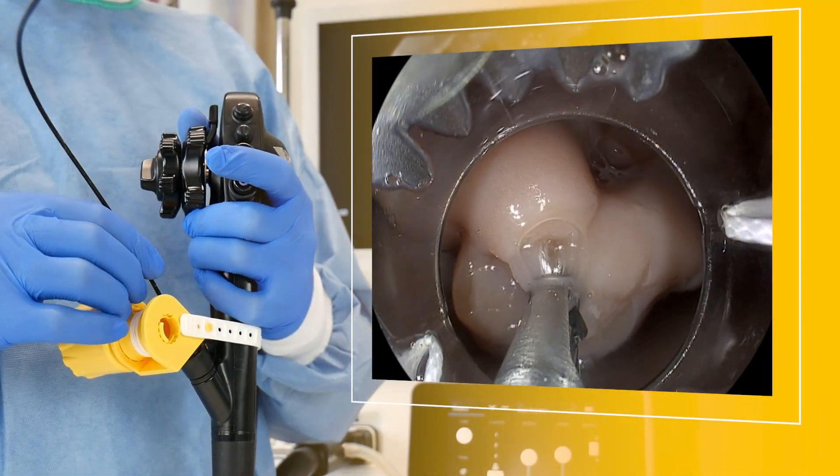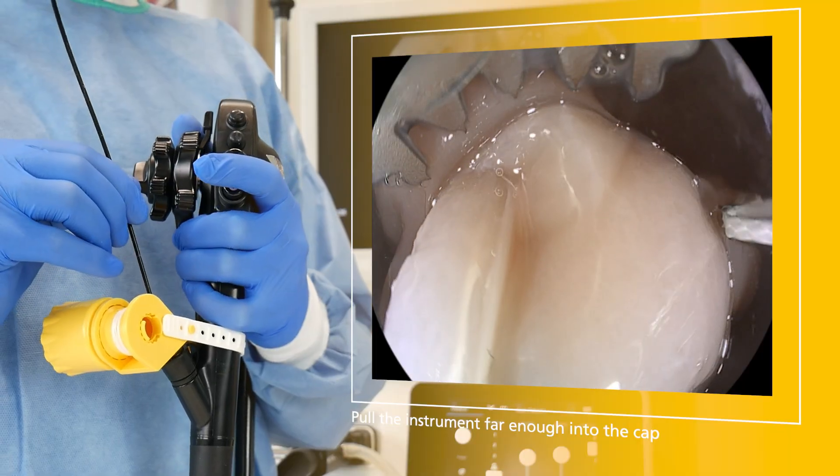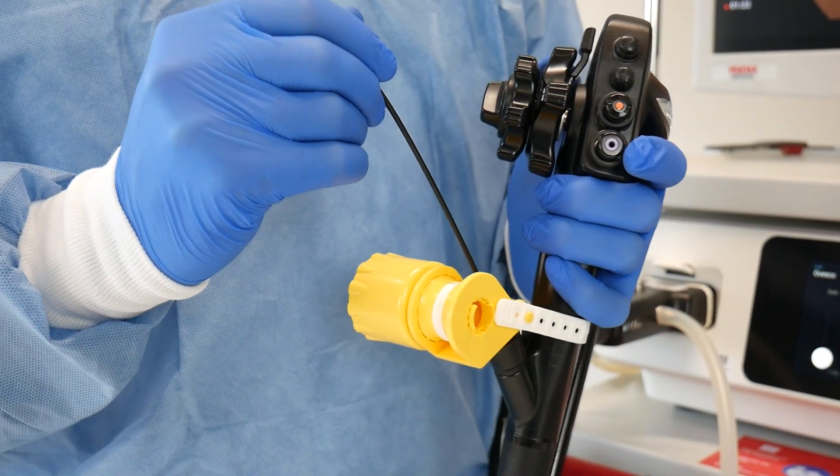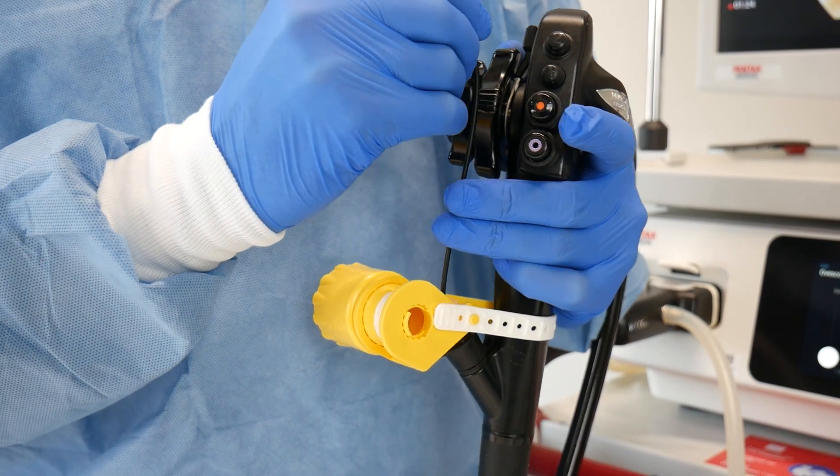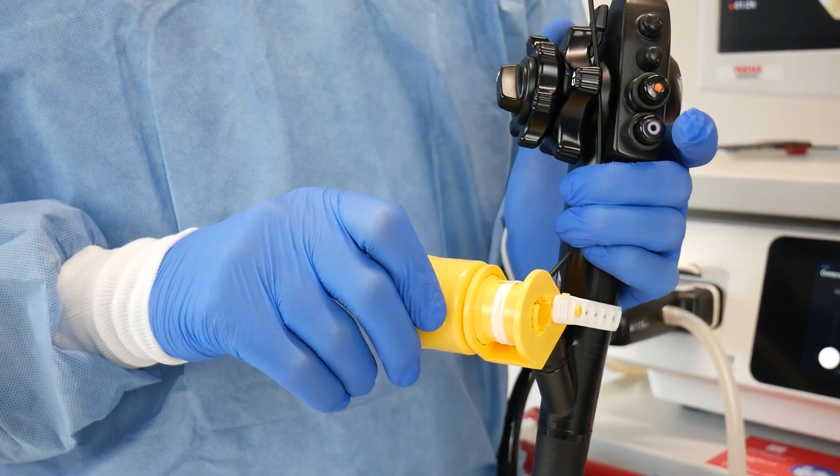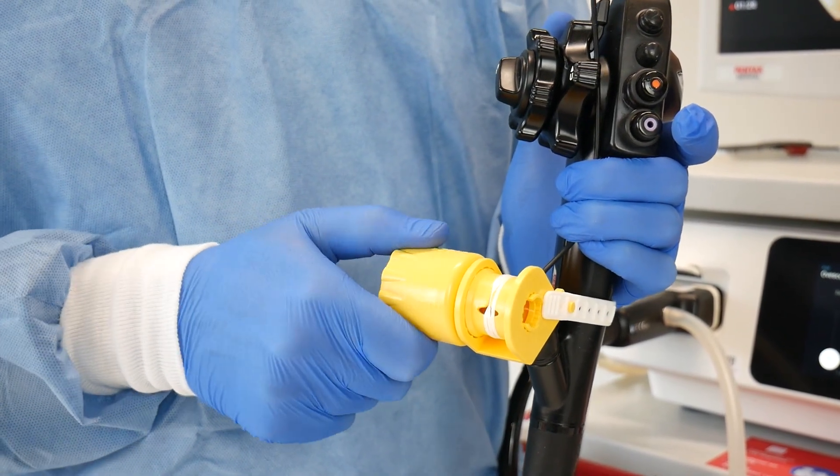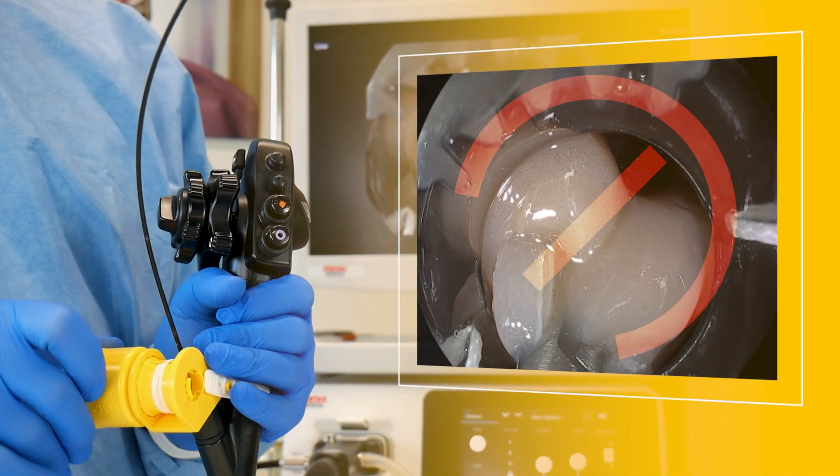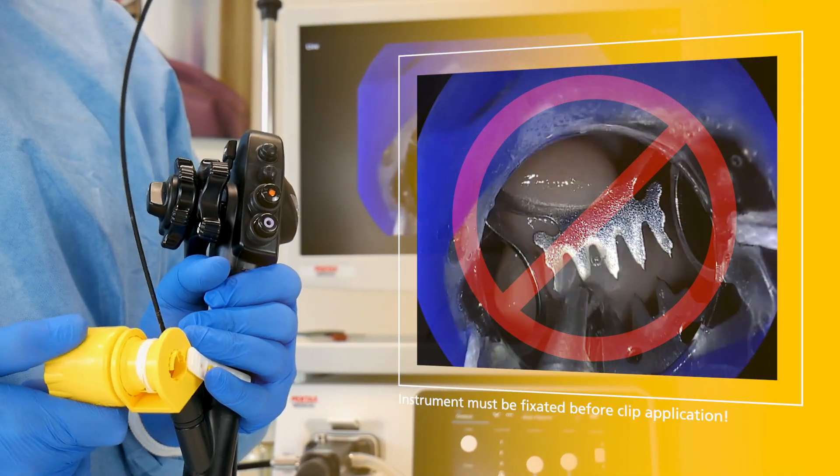Ensure that the tip of the instrument is sufficiently retracted into the cap before clip application. To ensure that the instrument does not move during clip deployment, fix it to the endoscope with your fingers. This prevents the clip from being applied to the instrument shaft and the instrument from being fixed to the tissue.